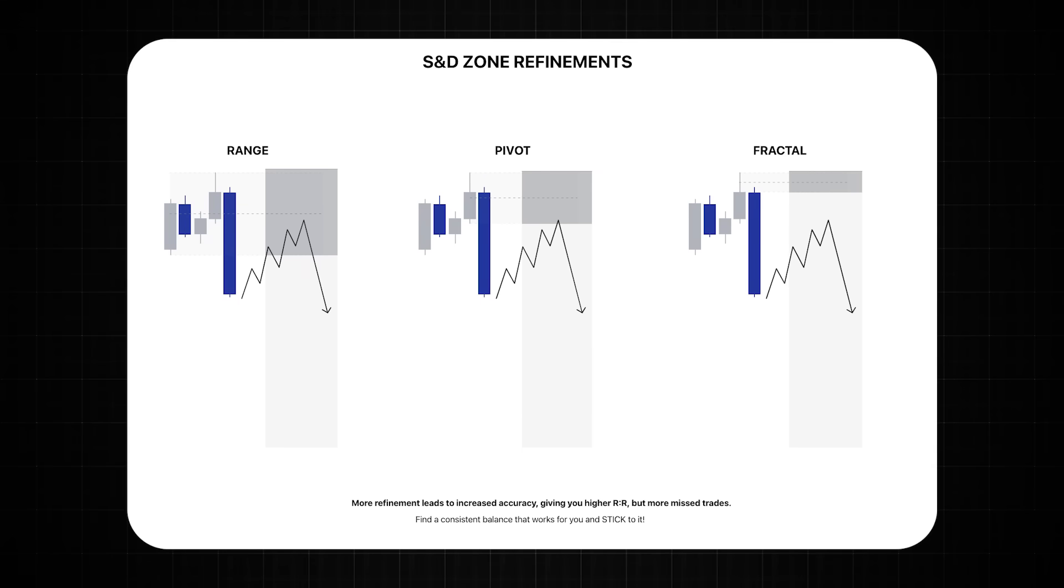And you can see how a range zone can be refined to a pivot zone or even a fractal zone which is just the wick. However more refinement does lead to increased accuracy giving you that smaller stop loss which in turn gives you that higher risk to reward but it does increase the probability of more missed trades. Find a consistent balance that works for you and stick to it so your edge can play out in the long run. You know don't be chopping and changing just because you feel like it.